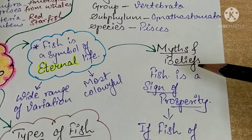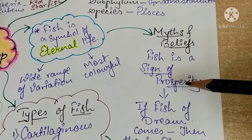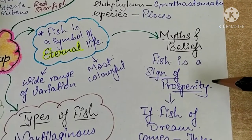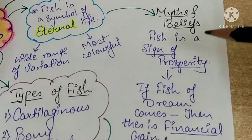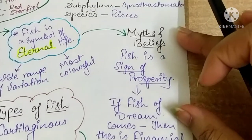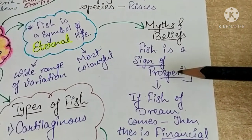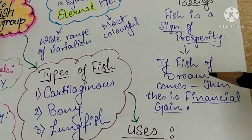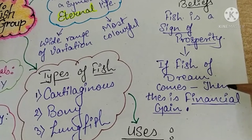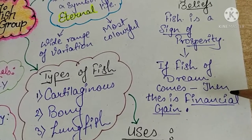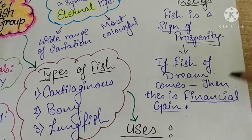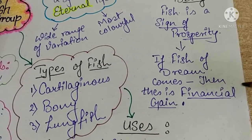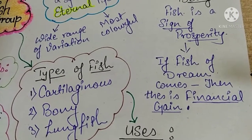Myths and beliefs of fish: Fish is a sign of prosperity. In northern India, it is believed that if fish is sent with a newly married woman, it is a sign of prosperity and fertility in her house. If a person dreams of fish, it is believed that person will have a financial gain in their trade, business, or work.